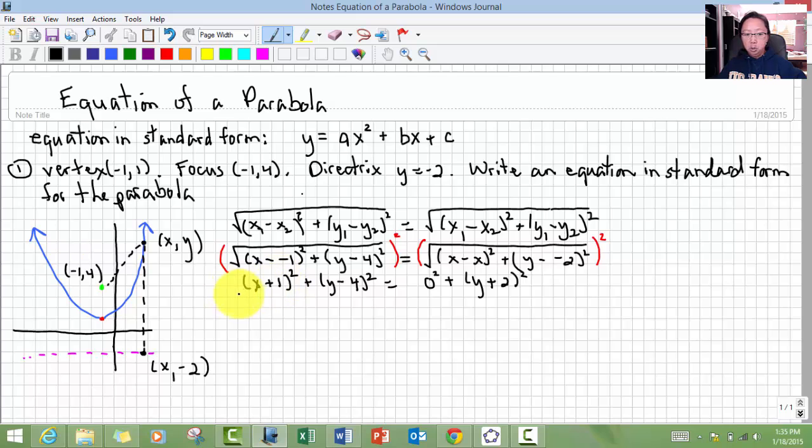Now I'm going to have to take care of this. This is x plus 1 times x plus 1, plus y minus 4 times y minus 4. This is just 0. y plus 2 squared is y plus 2 times y plus 2.